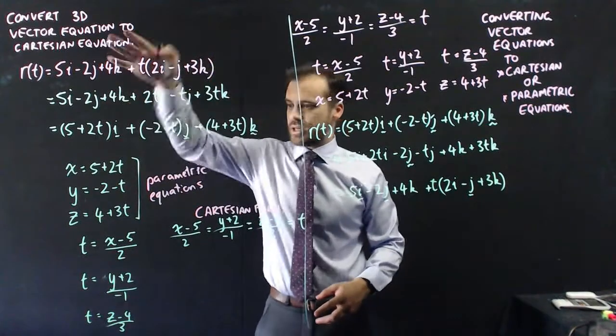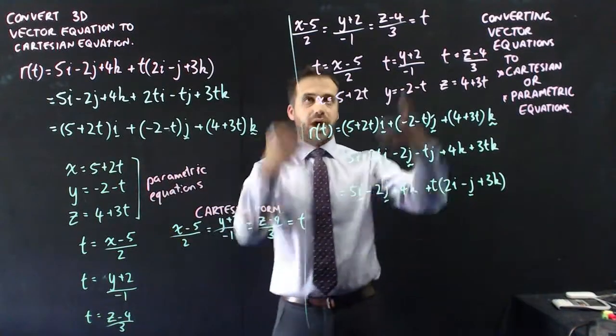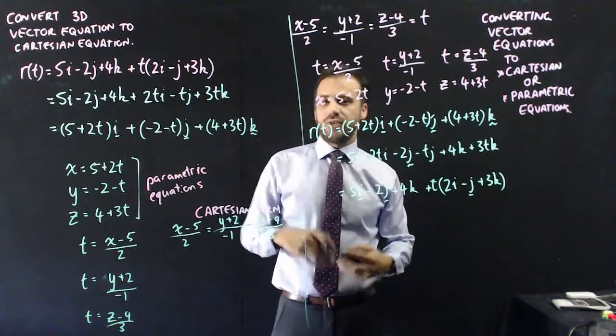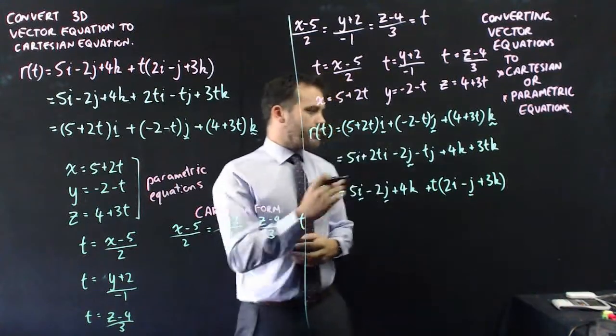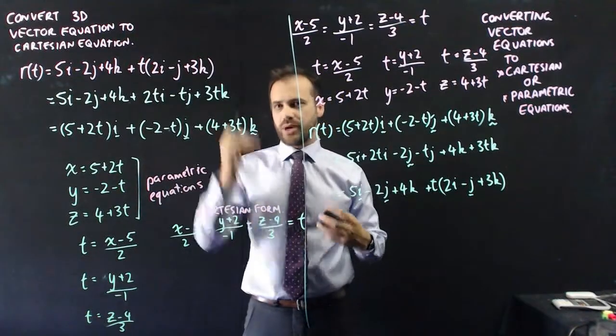We've managed to convert from vector to parametric to this strange Cartesian form and back from that strange Cartesian form all the way back to our vector equation form. That's how we convert from vector to parametric to Cartesian and all the way back again.